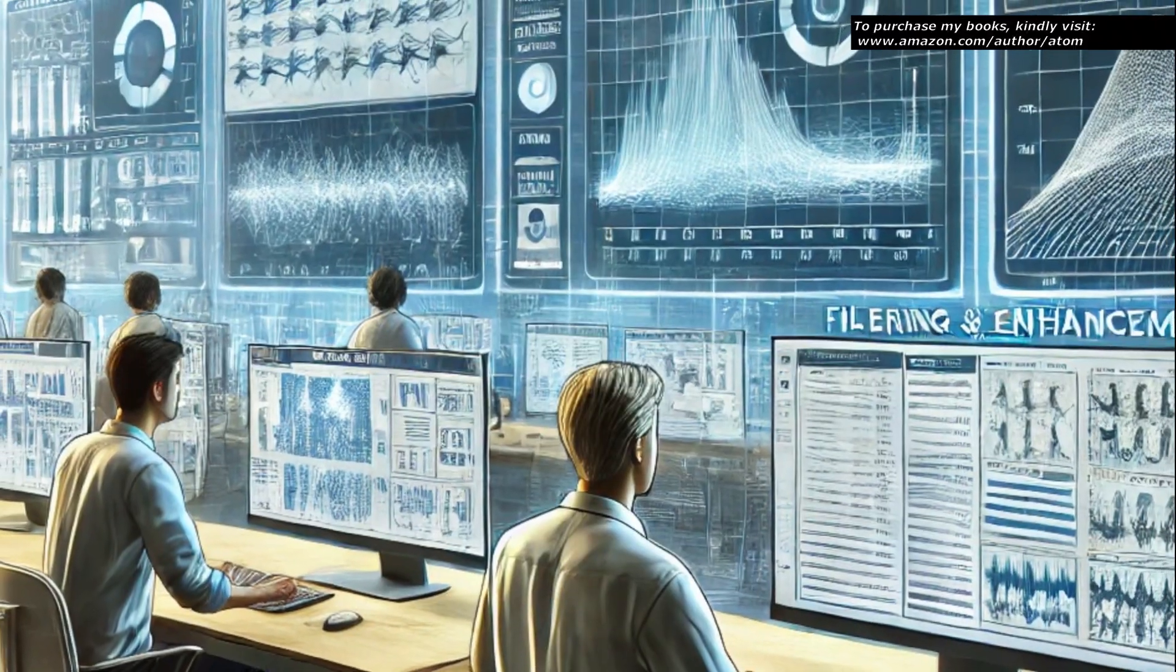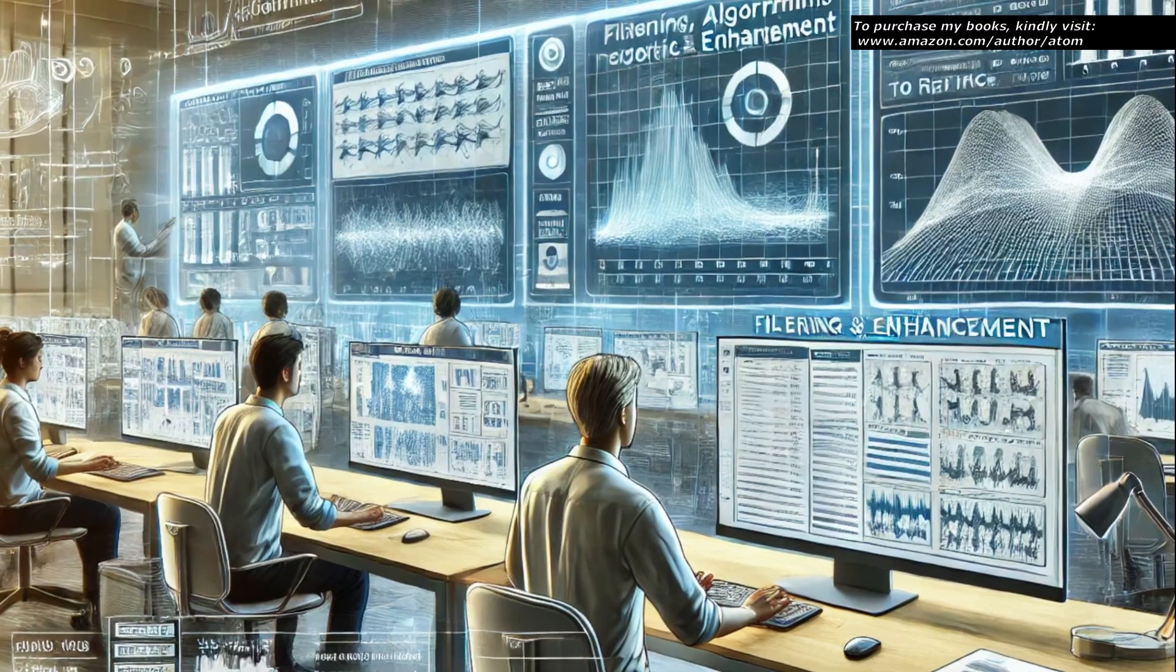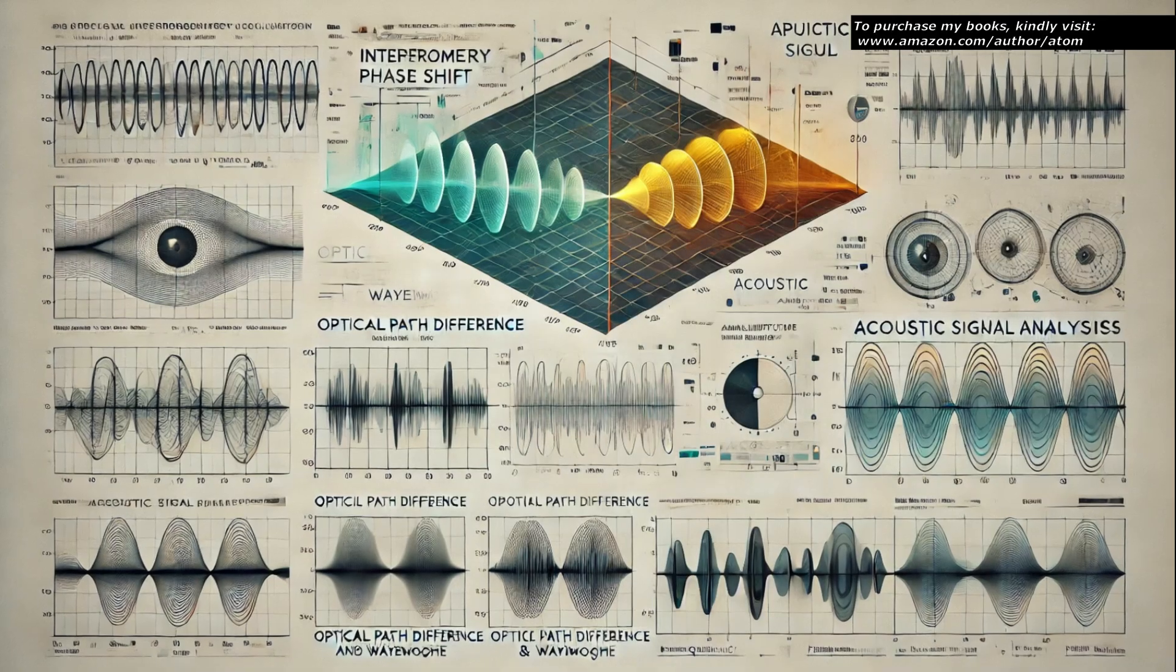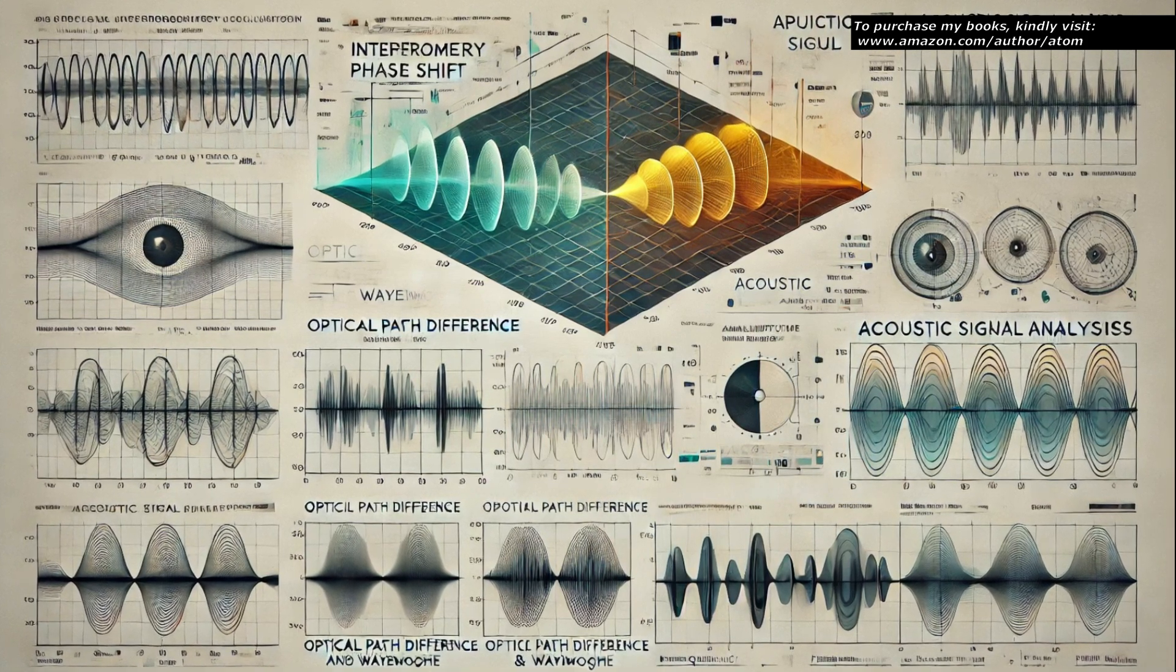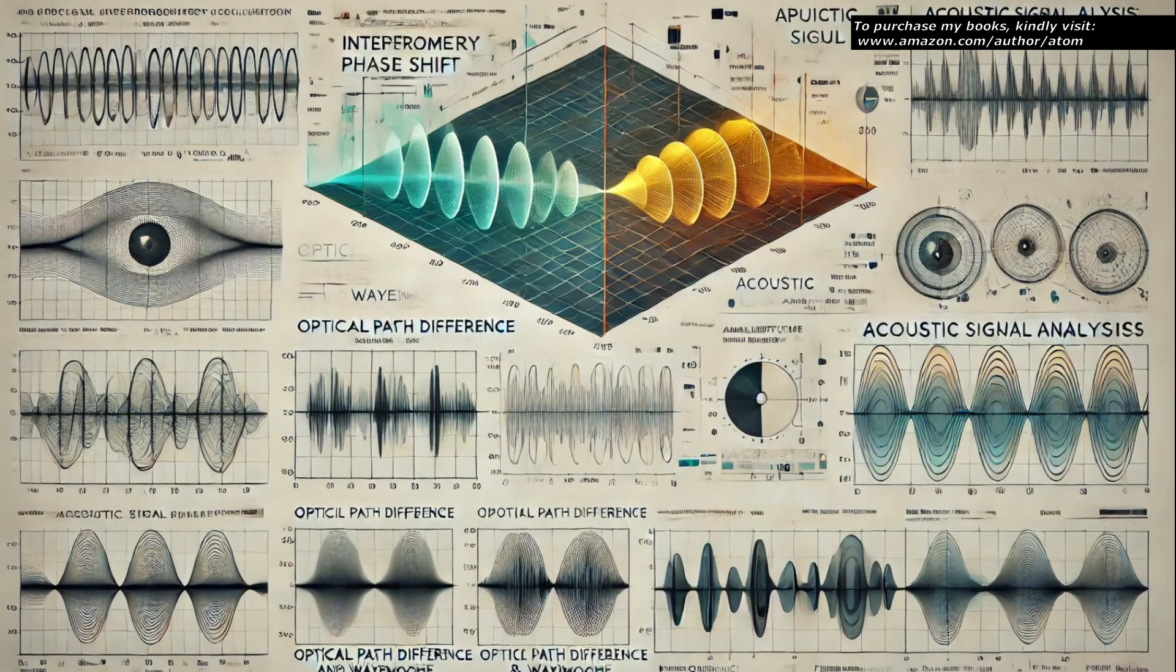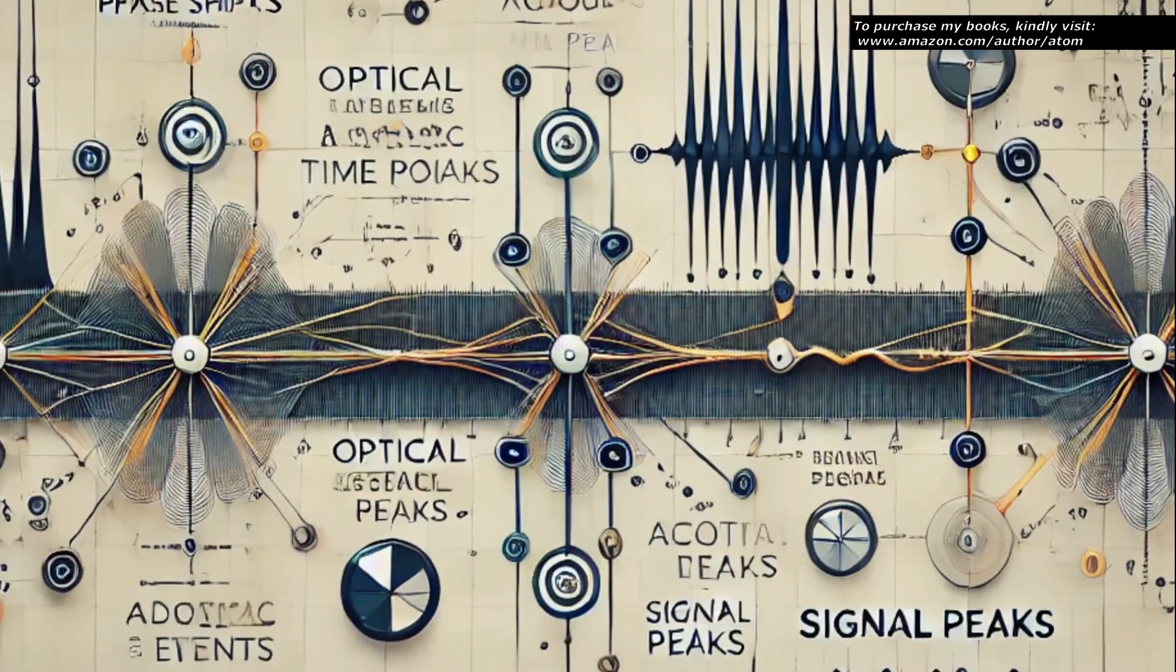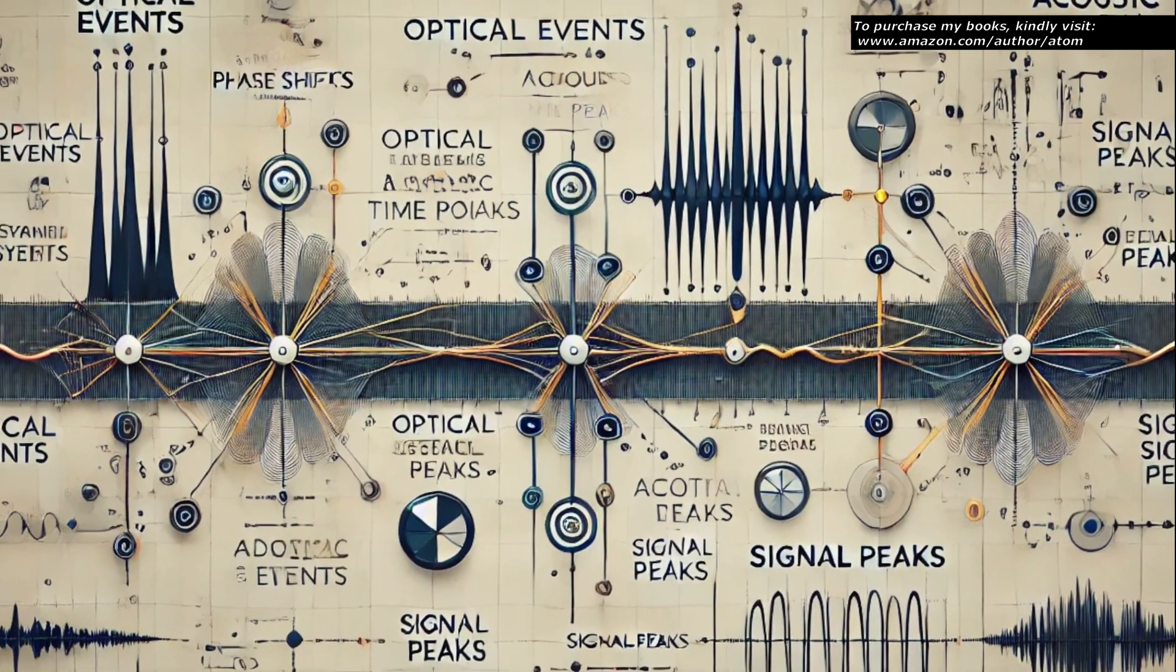Data analysis involves processing the signals from both systems to filter out background noise and enhance the detection of potential events. For the interferometry data, algorithms calculate the magnitude of any phase shifts, while the acoustic data is analyzed for amplitude, frequency, and waveform characteristics of the detected pressure waves. Events detected by both systems are correlated temporally to assess whether they are related.